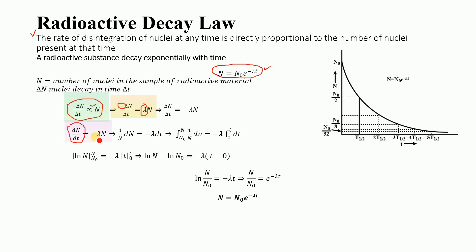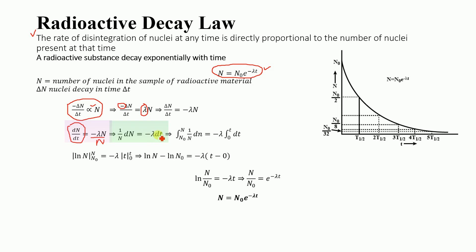Now we are going to do some mathematical manipulation. We will multiply both sides of this equation by 1/N and by dt, so on the left-hand side we get (1/N)dN, and on the right-hand side we get −λ dt.